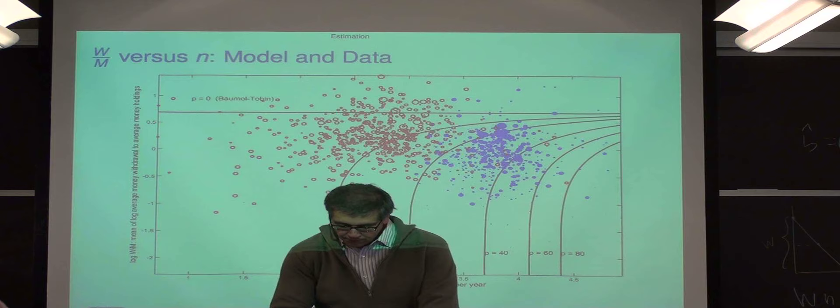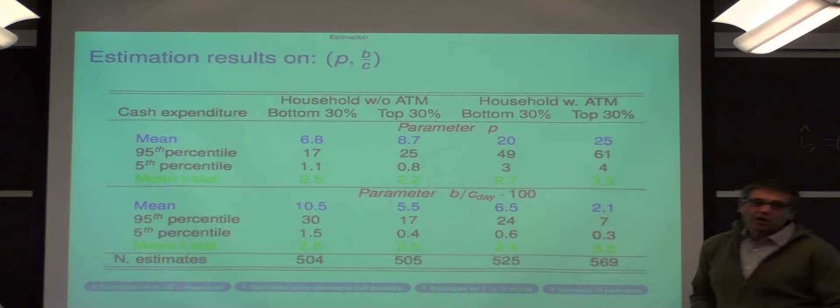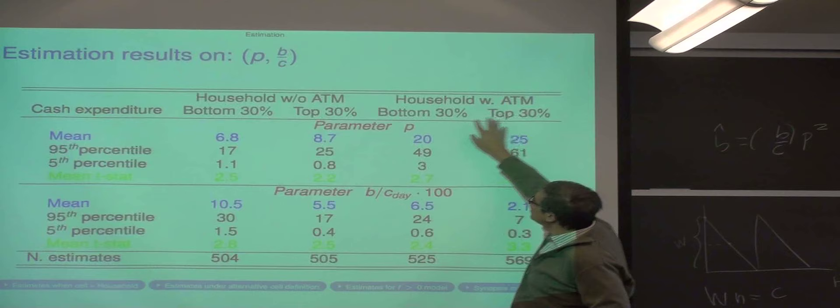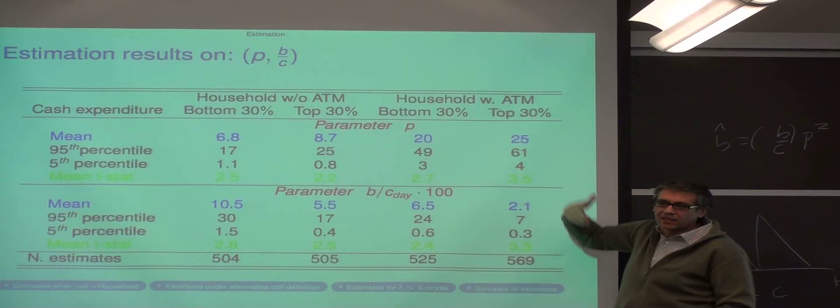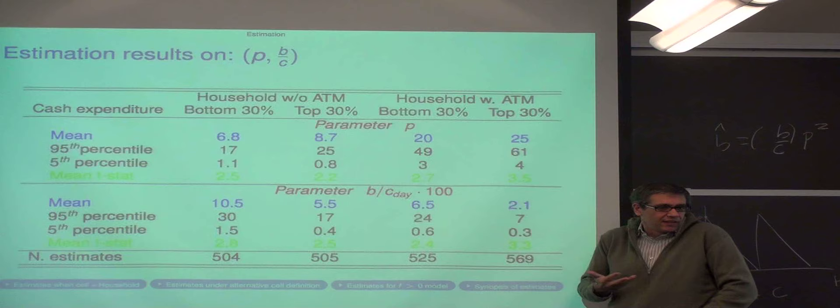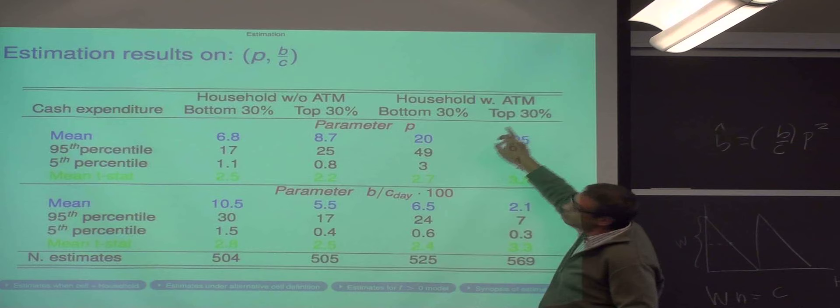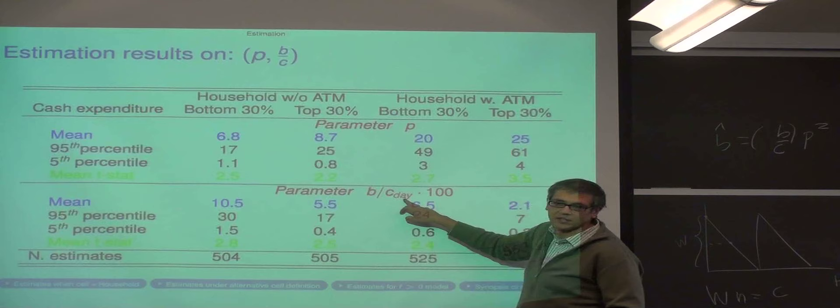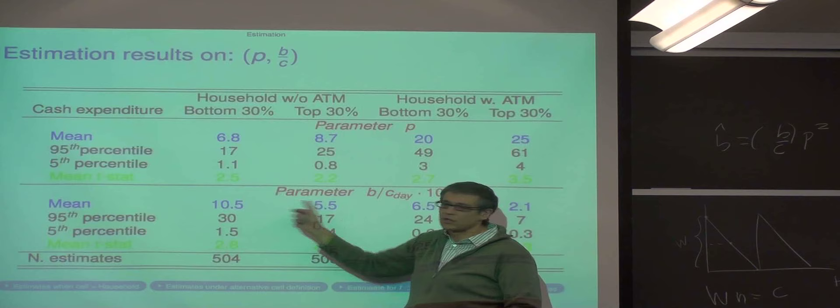So these are our parameters. There's heterogeneity across the parameters because of the cells. Mean means the mean across all the cells. So this is the parameter P. This is for households with ATM and without. So these guys have a much larger P, as they should. The idea is that these guys, that's why they have an ATM card. They must look, we didn't impose anything. It looks sort of reasonable to us. Then this is those in the bottom or 30% on the level of consumption. Think of the rich and poor. More or less the same P. This is the value of B over C. So B is a cost. For those guys without ATM, we find a cost that is much larger than for those with ATM. So we think of this as sort of reasonable.